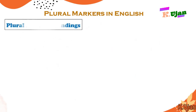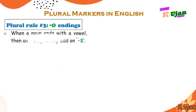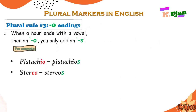Here is plural rule number 3, covering O endings. When a noun ends with a vowel then an O, you only add an S. For example, pistachio changes to pistachios — because the ending letter is O and before it is the vowel I. Another example: stereo becomes stereos, because before O there is the vowel letter E.